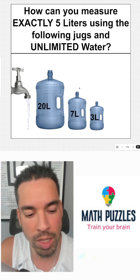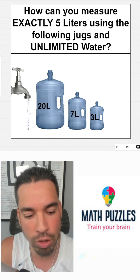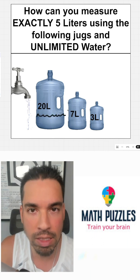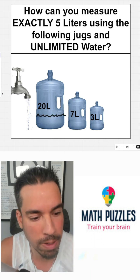So we have unlimited water, but again, we want exactly five liters. So some people might say, all right, I'm just going to take the 20 and fill it up to this amount, fill it up to one fourth of 20 and I've got five.